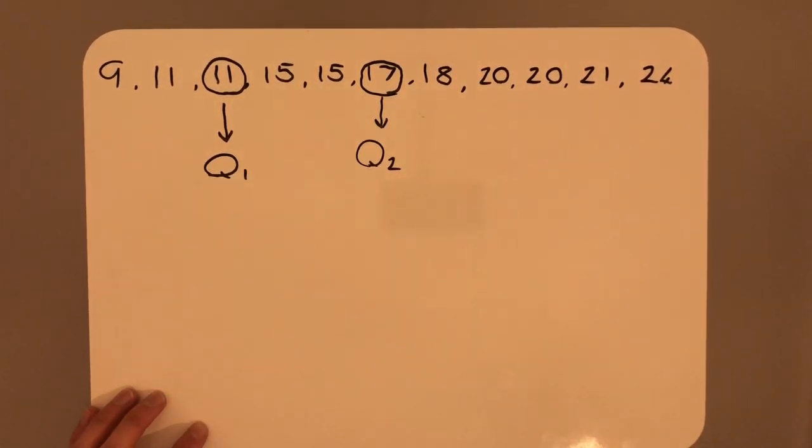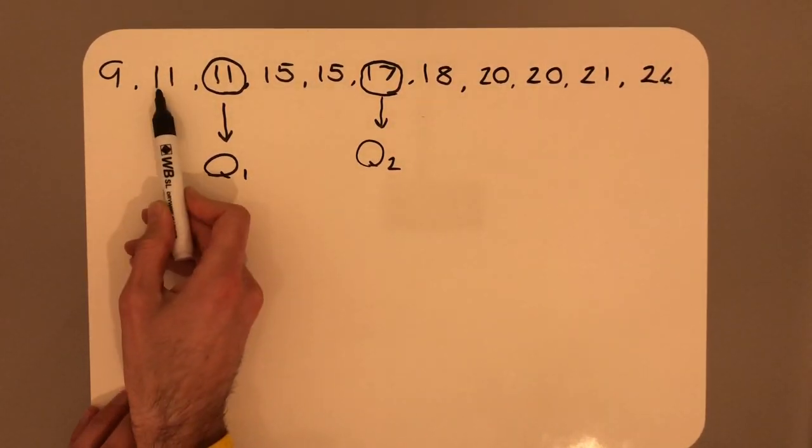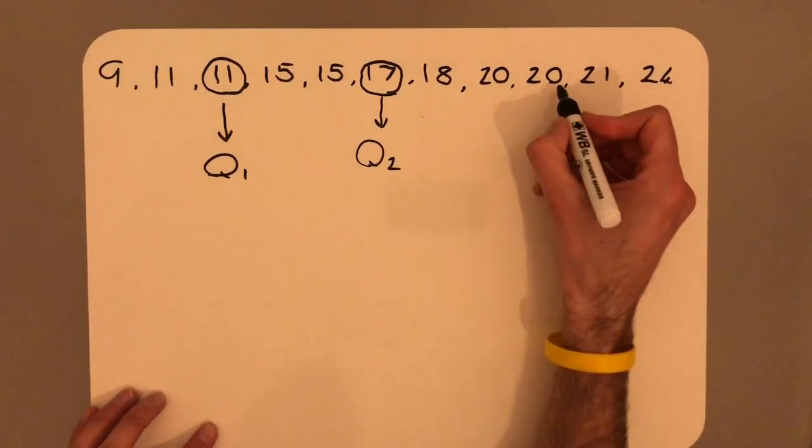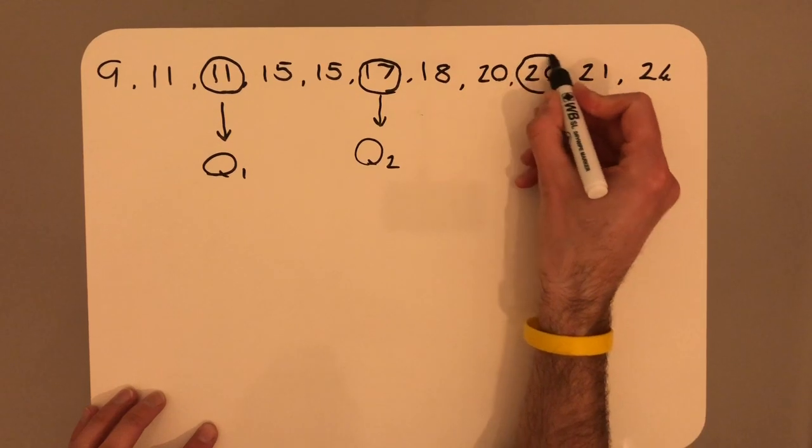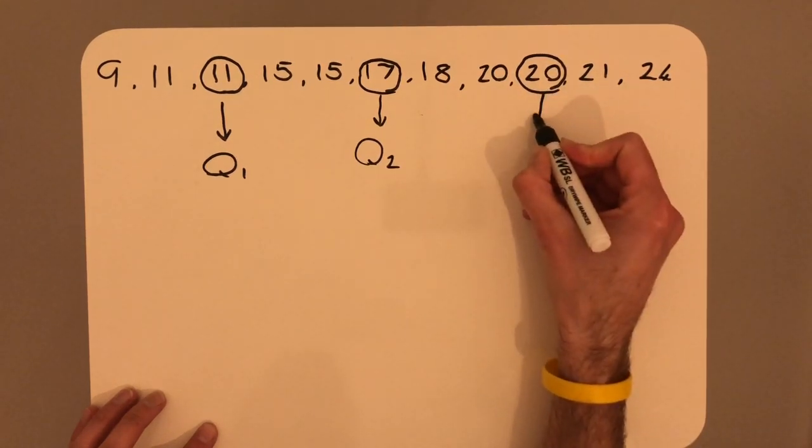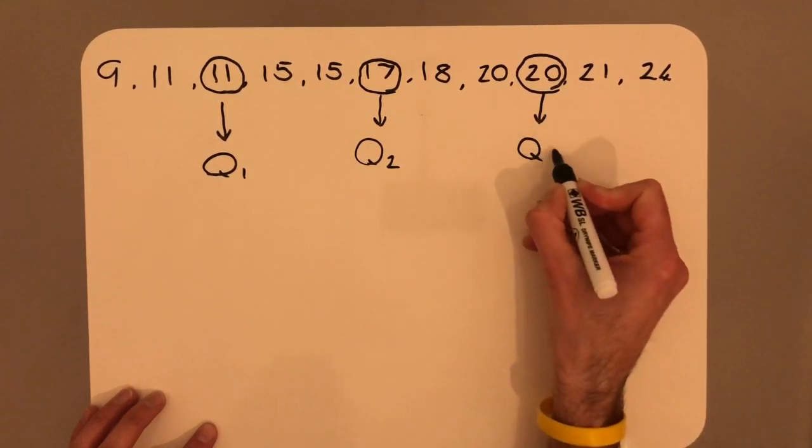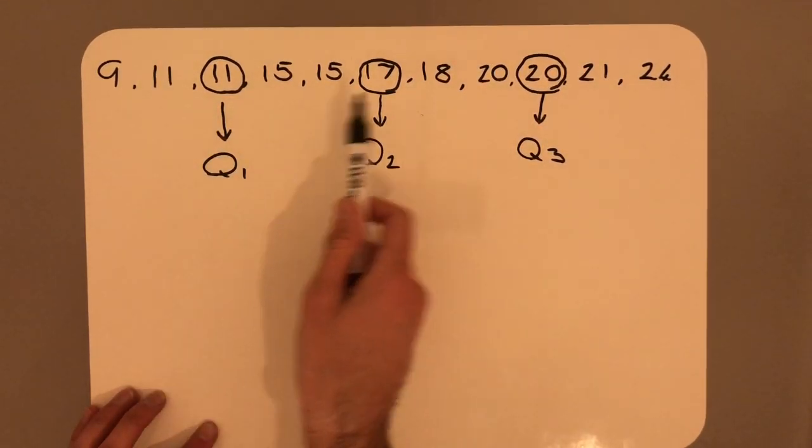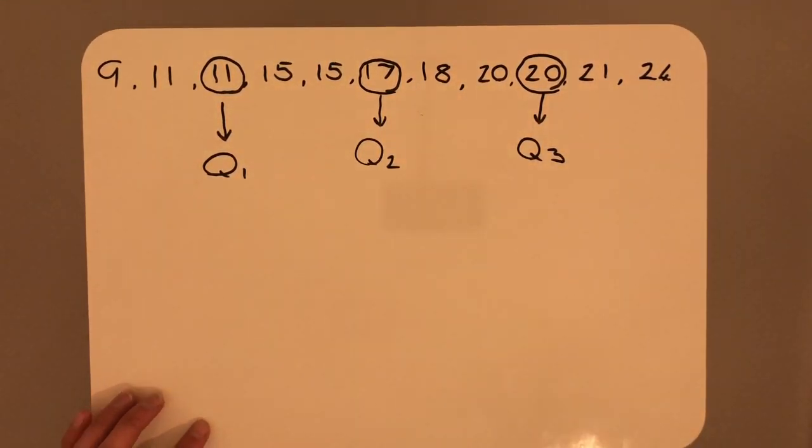Again, we must look for symmetry, so therefore we've come 2 in from the start, we can come 2 in from the end, hold that, and that will give us Q3. You should now see that you've got an element of symmetry to allow us to get our quartiles.